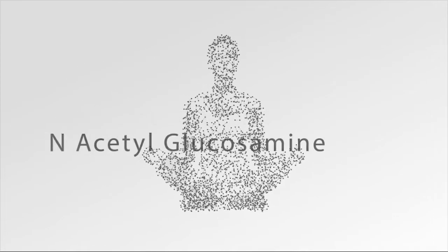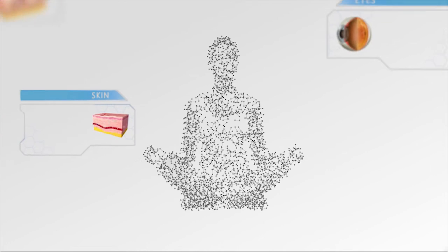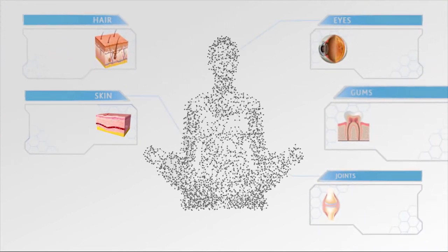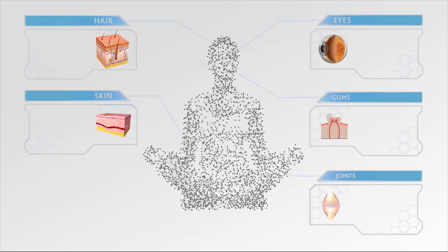Hyaluronic acid is found commonly in many human tissues including the skin, eyes and joints, hair and gums and is a major component of the extracellular matrix.